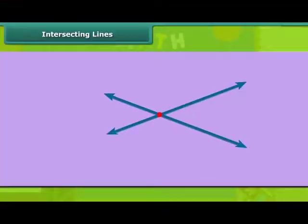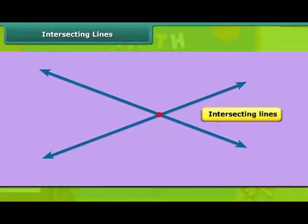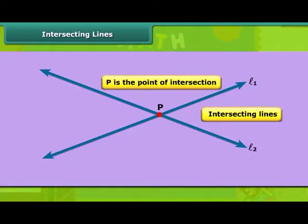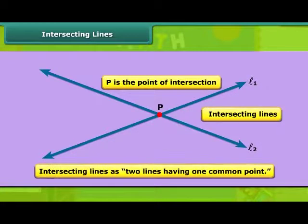Look at the figure. When two lines pass through a single point, we call them intersecting lines. Two lines, L1 and L2, pass through a point P, then L1 and L2 are intersecting lines and P is the point of intersection. We can also define intersecting lines as two lines having one common point. A variety of examples around us has intersecting lines.